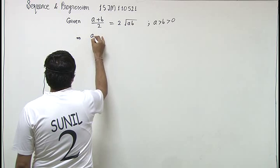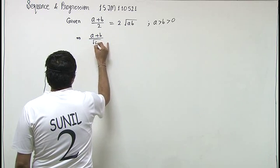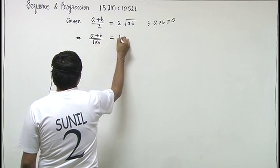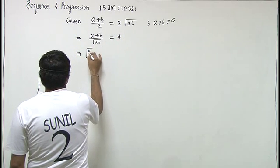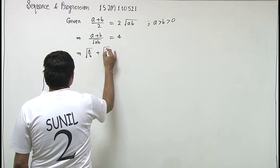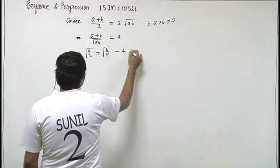So on dividing by root AB, or cross multiplying, we will have this. So this is root A upon B plus root B upon A minus 4 equal to 0.